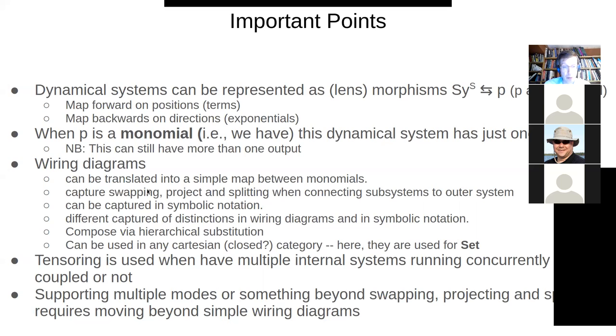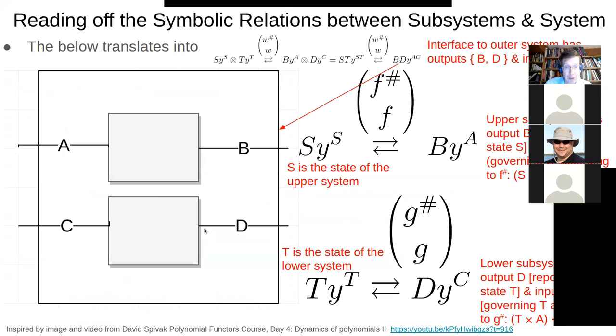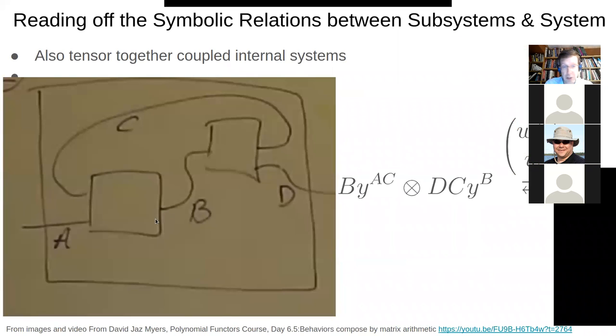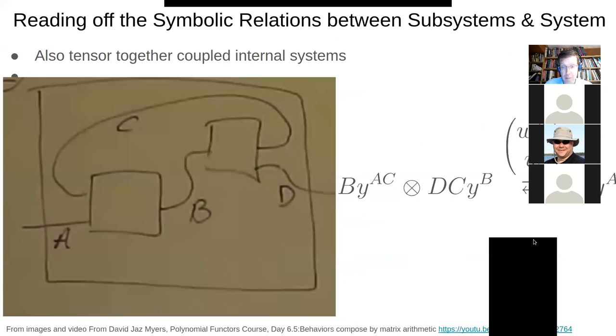And on the left hand side for wiring diagrams for dynamical systems, we're going to have something of the form S Y to the S. So wiring diagrams are going to allow us to characterize the relationship between subsystems and outer systems,